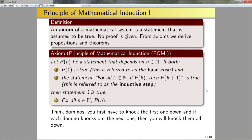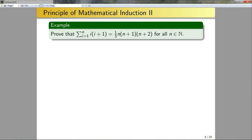One very common point students miss: you must show that both conditions (1) and (2) hold. In your formal proof I really want to see you label and prove the base case and then the inductive case separately. Let's now look at an example of using the principle of mathematical induction. Prove that the sum from i=1 to n of i(i+1) equals the right-hand side expression for all natural numbers n.